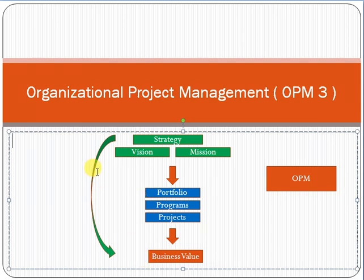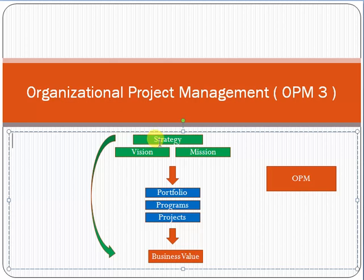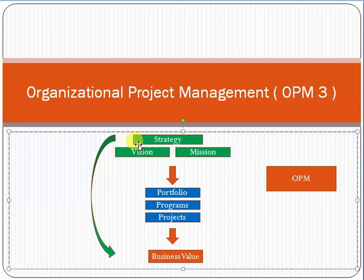This is where OPM comes in. OPM defines the ways or methodology to ensure that the business value is aligned with the strategy of an organization. You can measure the maturity of project management by how well the portfolio, programs, and projects are aligned with the company's strategy — if they're aligned, the business value will be achieved as per the strategy. That's all from my side. Hope you like this video — please share it with your friends and colleagues.